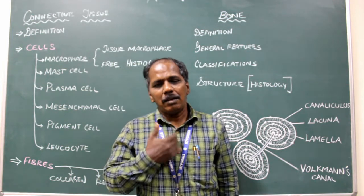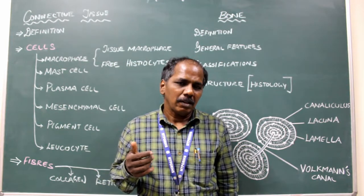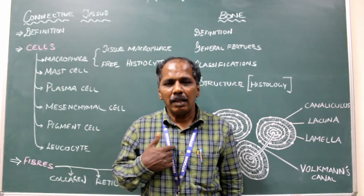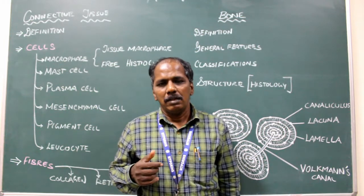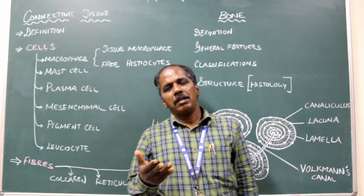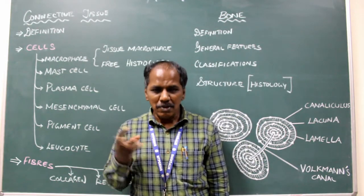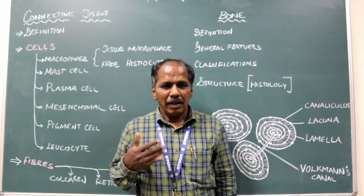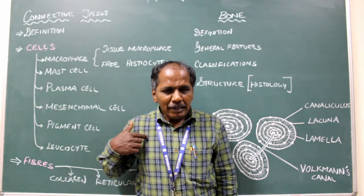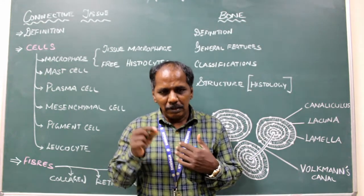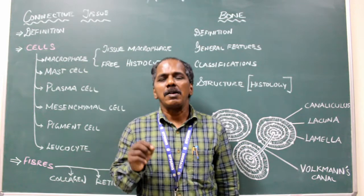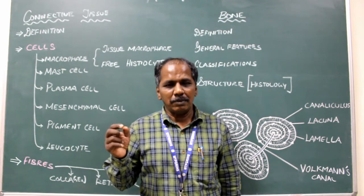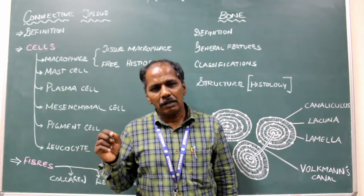Sternum and the ribs. There are 12 pairs of ribs attached to the sternum by cartilage known as costal cartilage. According to their attachments, the ribs are divided into true ribs, false ribs, and floating ribs. True ribs are those which are directly attached to the sternum through the costal cartilage — the first to seventh ribs are true ribs.